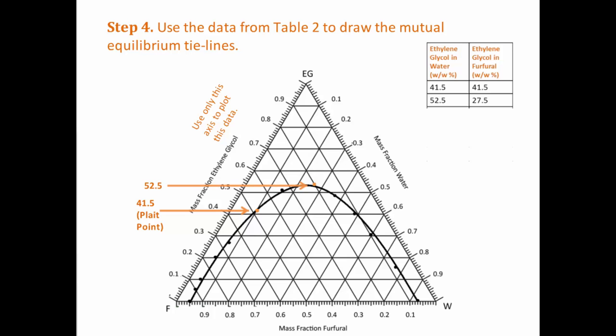We have another point with 27.5% ethylene glycol on the left-hand side of the curve, or near the apex labelled F for furfural. We can now draw a tie line between these two points. Repeat this for the next row and for the rest of the table.